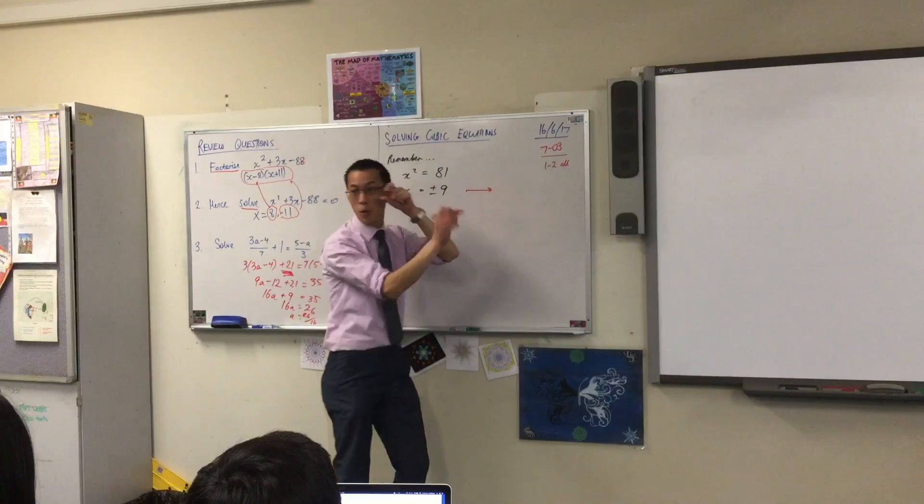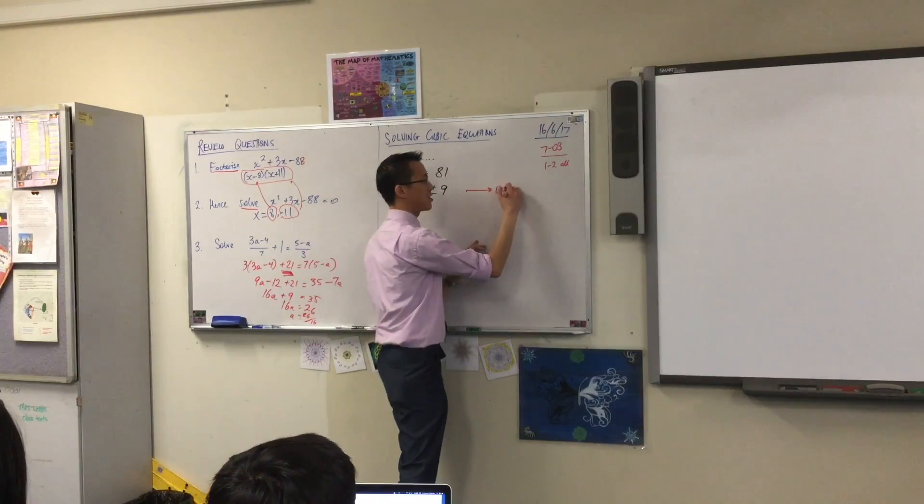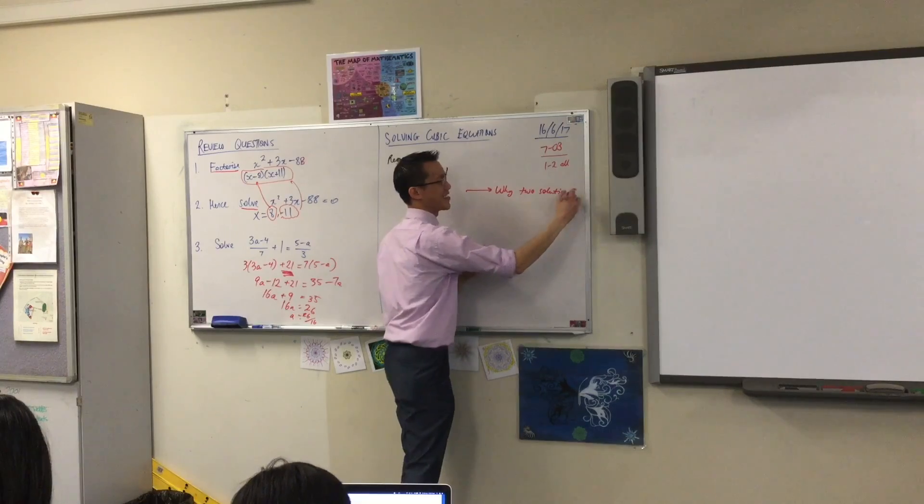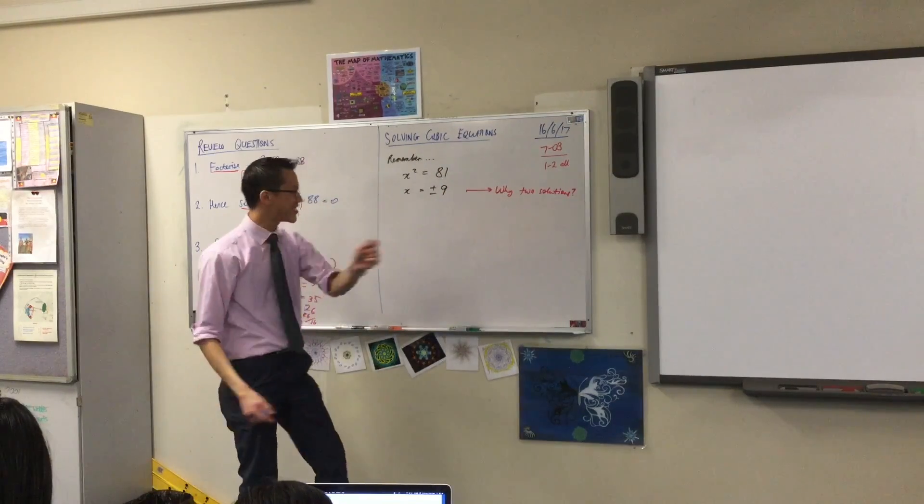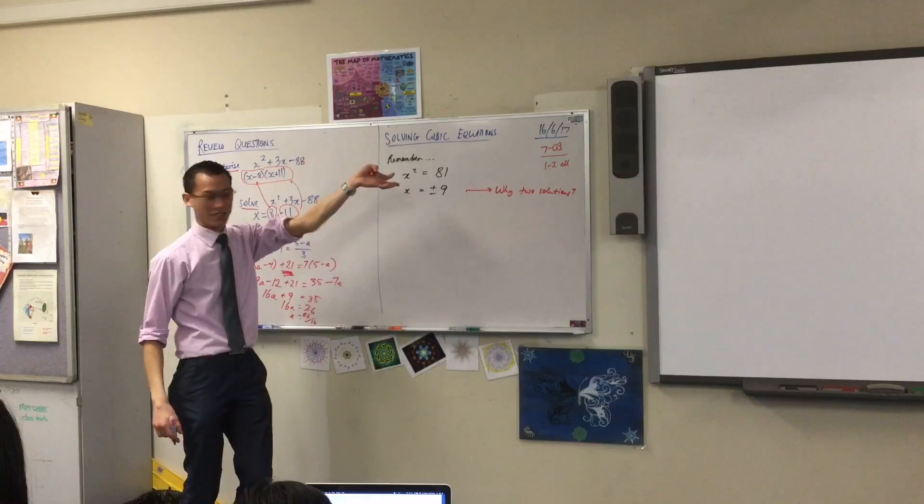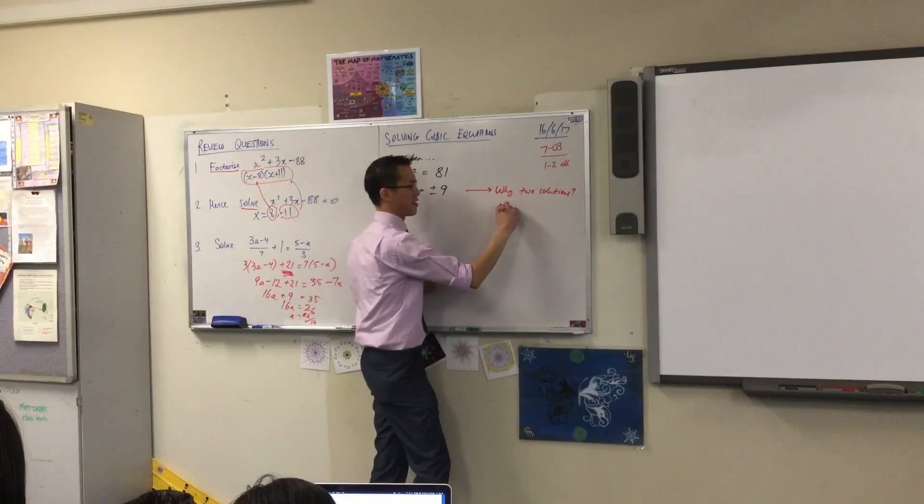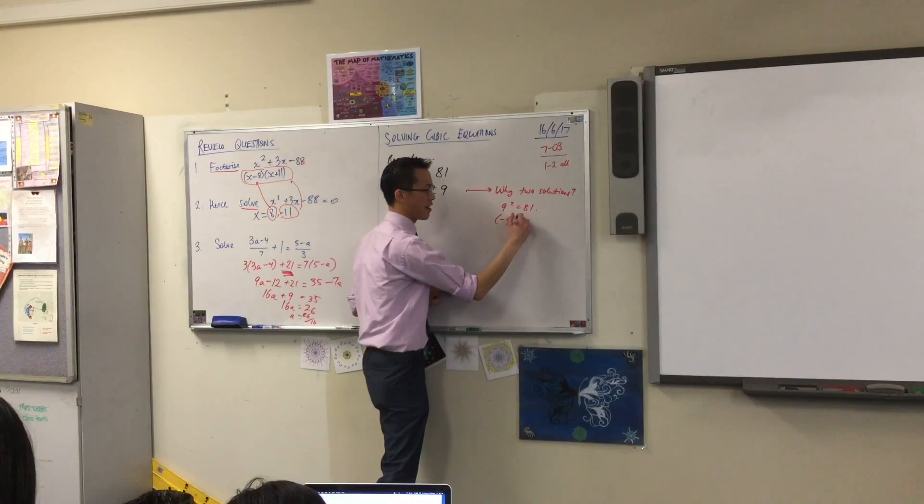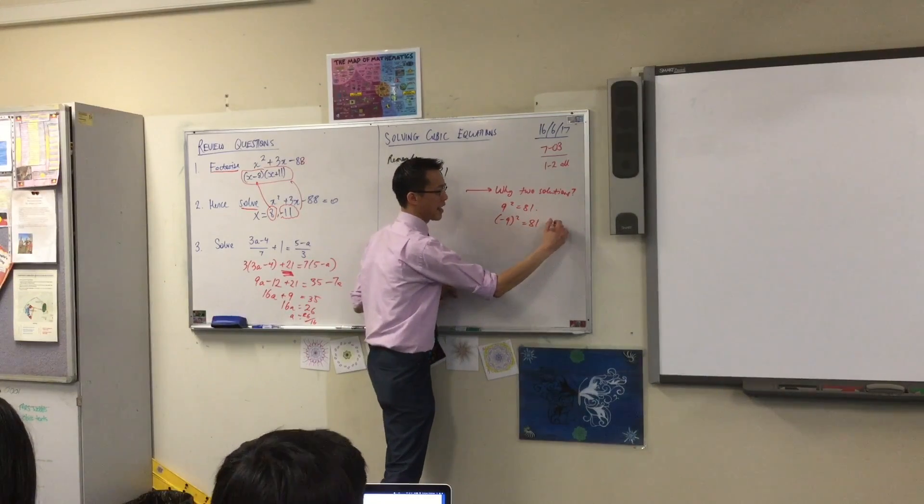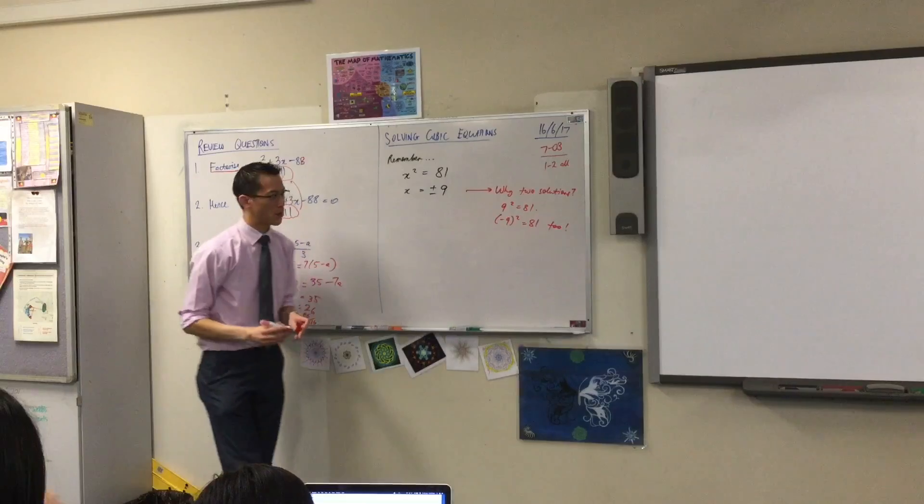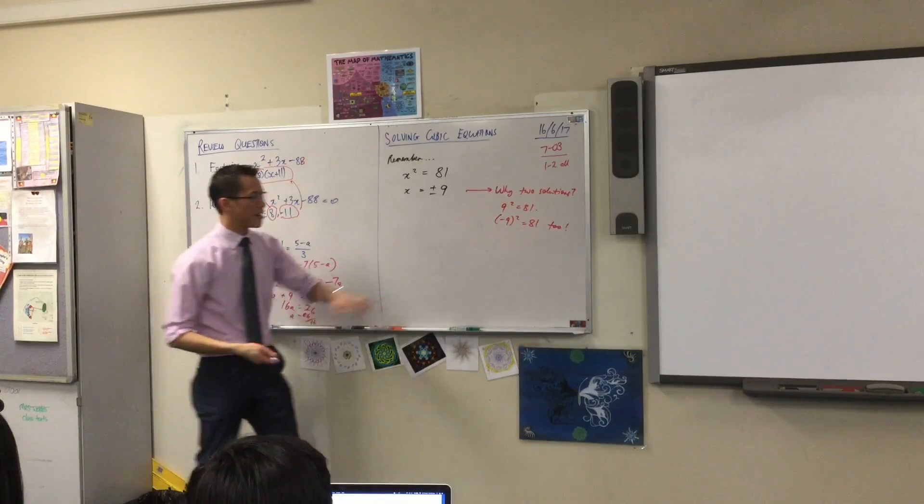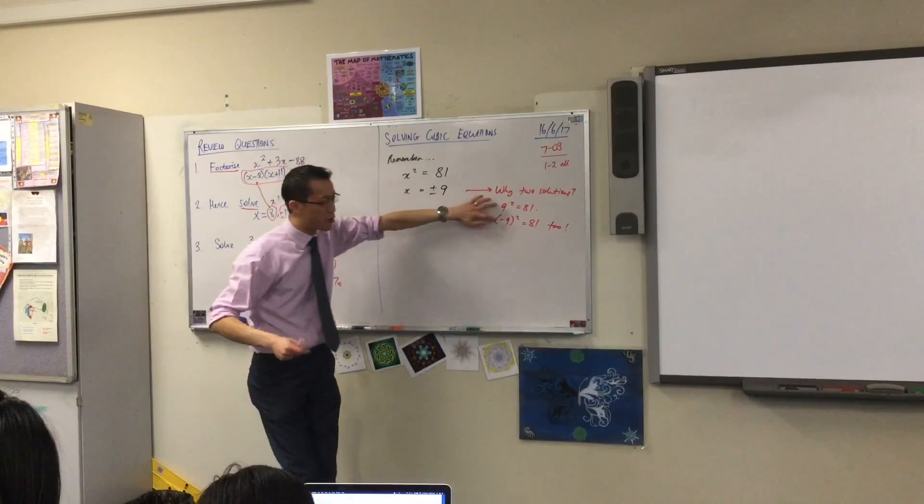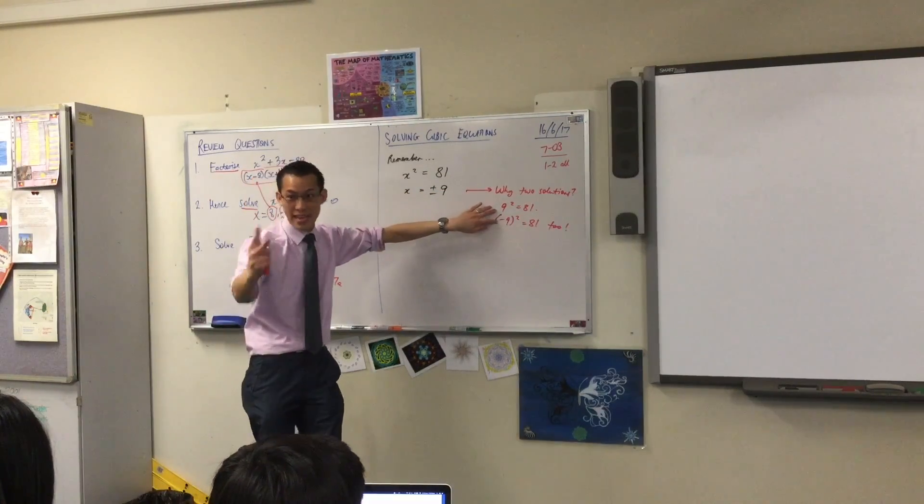Why are there two solutions? This is so important, I want you to write it down with me. Not because there is. Because if you look back at the original equation, 9 squared equals 81. Negative 9 squared is 81 as well. So being that there are two numbers you can put into this equation and they both work, then both of those are solutions. That's why there are two.